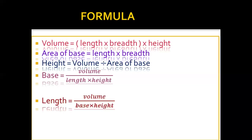Volume = length × breadth × height. Area of the base = length × breadth, because the base of the cuboid is like a rectangle. Height = volume ÷ area of the base. Breadth = volume ÷ (length × height). Length = volume ÷ (base × height). In all these formulas three measurements are given and one is unknown, and we calculate accordingly whether it is length, breadth, or height.